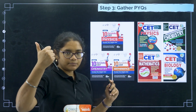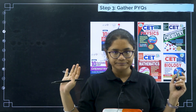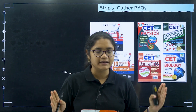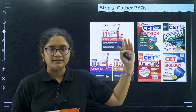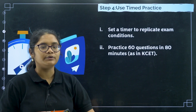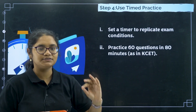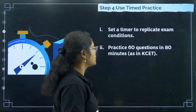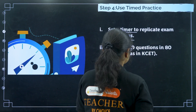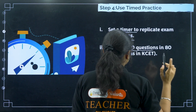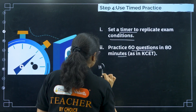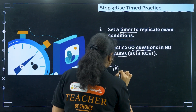So: step one, select a chapter based on weightage; step two, read the chapter and ensure clarity of concepts; step three, gather the resources. Step four is timed practice. You need to sit and solve questions, but make sure you use a timer to replicate the exam conditions. If you are doing 60 questions in 80 minutes, maintain that ratio. For chapter-wise previous year questions, do them chapter by chapter.